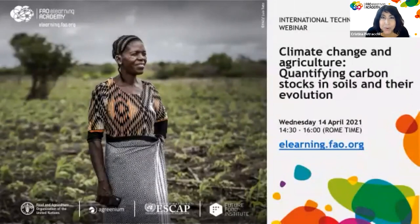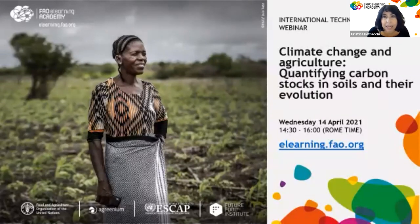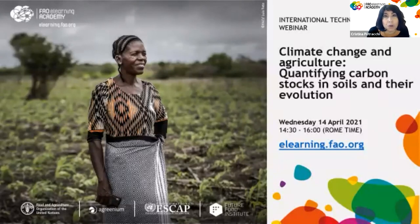Thank you very much Fabio and welcome everyone to our international technical webinar. Today we will be talking about climate change and agriculture, and more specifically on quantifying carbon stocks in soils and their evolution. This webinar is part of a series organized for 2021 by four organizations: Future Food Institute, Agrinium, the UN Economic and Social Commission for Asia and Pacific, and FAO. We work throughout the world with over 40 partners.